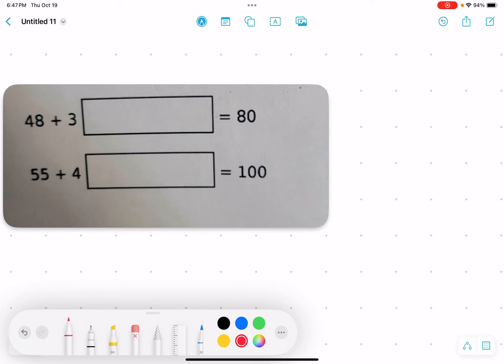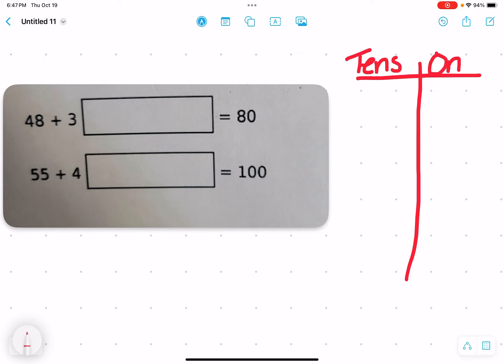I'm going to draw it out by putting my place value chart. I'm going to label it tens and ones. Next, I'm going to put 48, which has 4 tens and 8 ones.